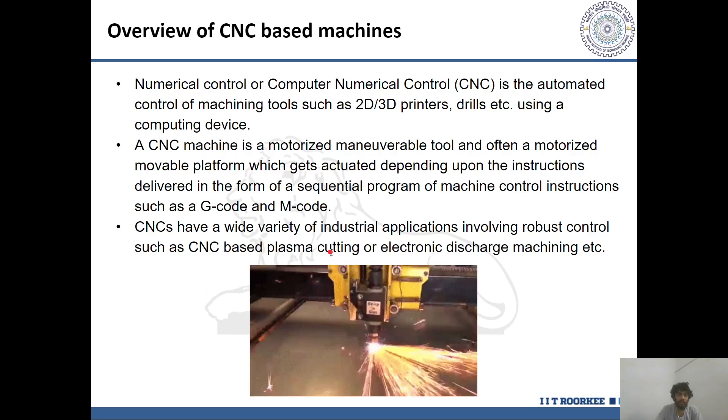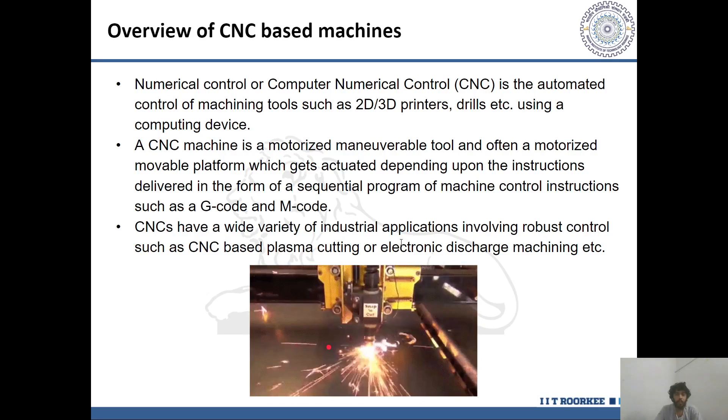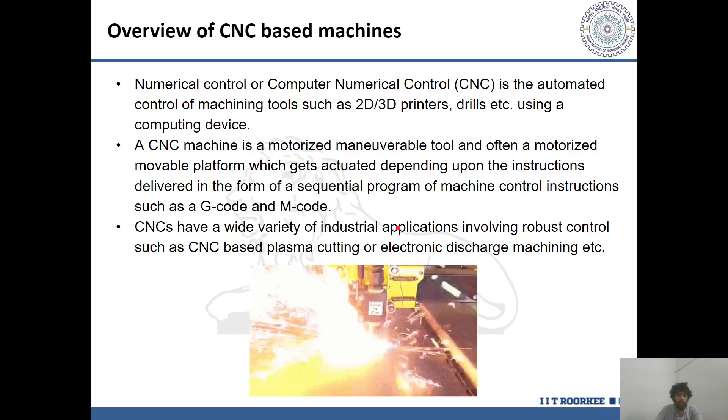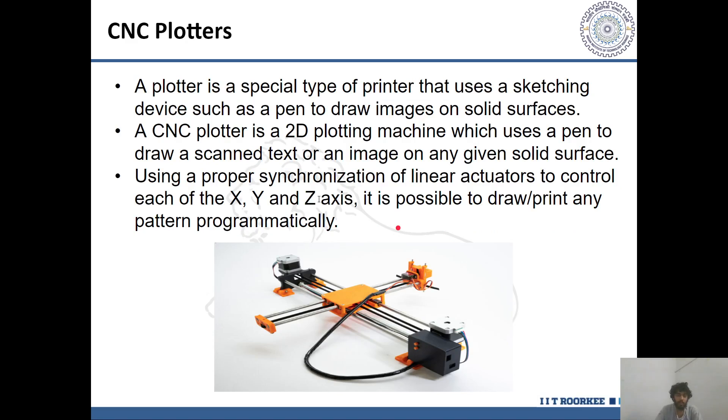Starting out with CNC, CNC basically stands for Computer Numerical Control. It is a manufacturing process in which pre-programmed computer software dictates the movement of factory tools and machinery. The process can be used to control a range of complex machinery from plasma cutting to electronic discharge machining. CNC basically consists of a motorized movable platform which gets actuated depending upon the instructions delivered in the form of a sequential program of machine control instructions. In this case, I have tried to develop a two-dimensional plotter which is a printer that uses a sketching device such as a pen making use of the concepts of CNC machines. This plotter is capable of drawing scanned text or images on a given flat solid surface and by upgrading the control logic, it can be further improved to execute a wide variety of complex tasks.